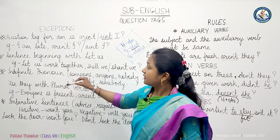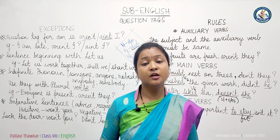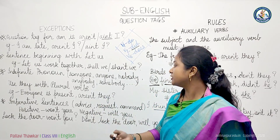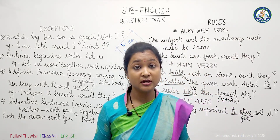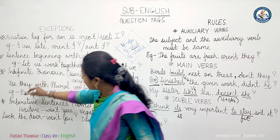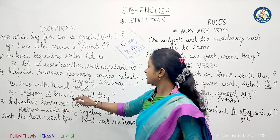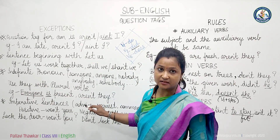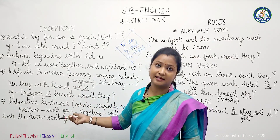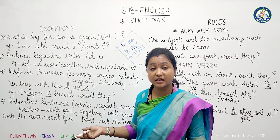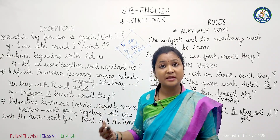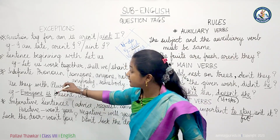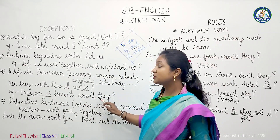Similarly, if the sentence begins with an indefinite pronoun — such as someone, anybody, somebody, nobody — we always use the plural form in the question tag. For example, 'Everyone is present, aren't they?' — even though 'everyone' might seem singular, this is an exception. We treat indefinite pronouns as plural, and since 'are' is the plural form of the be-verb, we use 'aren't they' rather than 'isn't he/she'.